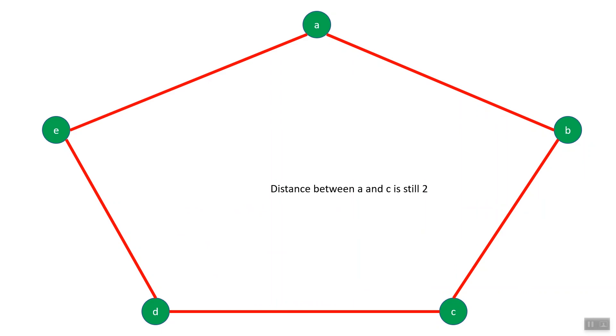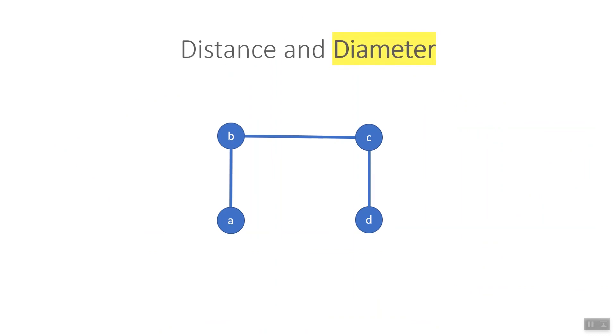In graph theory, we are talking about the degrees of separation, or the number of edges in the shortest path between two vertices. Finally, the diameter of a graph is the distance between the two farthest vertices in the graph. Or in other words, the number of edges of the longest shortest path between any two vertices in the graph. To find the diameter, calculate the distance between every pair of vertices in your graph. The highest distance is the diameter of your graph. In this case, the diameter of our graph is three.